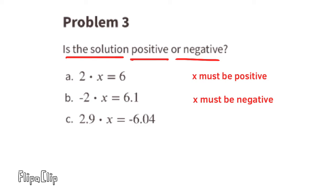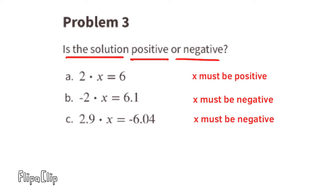Part c: a positive times what number equals a negative? Since a positive times a negative equals a negative, x must be negative. Part d: a negative times what number equals a negative? Since a negative times a positive equals a negative, x must be positive.